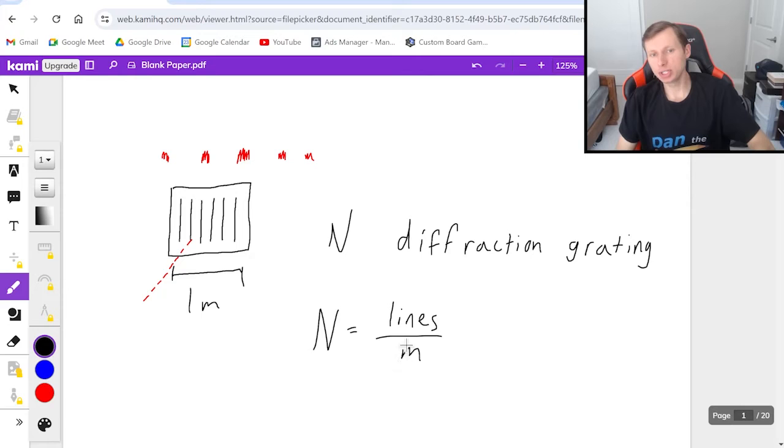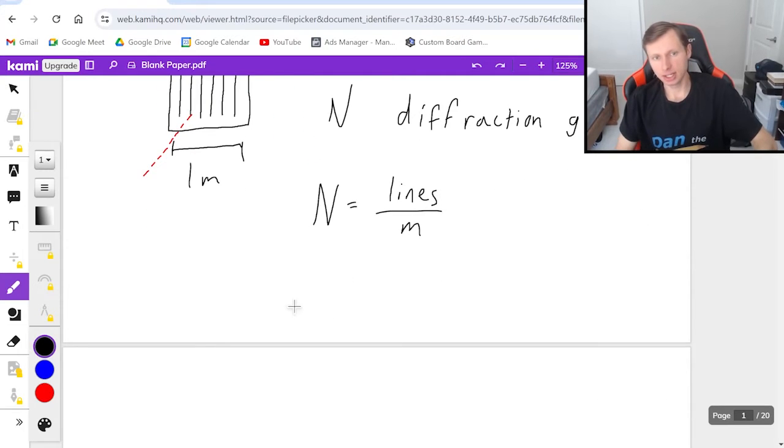If they ever give you units other than meters, so for instance, centimeters or millimeters, you do have to convert that to meters, that's extremely important. And another equation we have for n is that n is equal to one over d, or you could write d equals one over n, that's also correct.